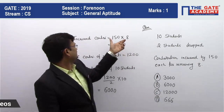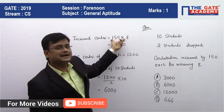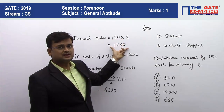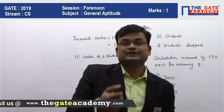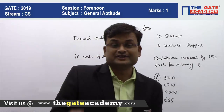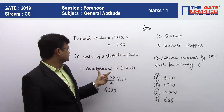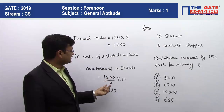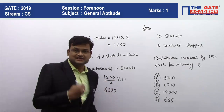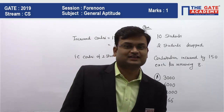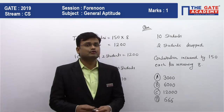The increased contribution of eight students multiplied by 150 is 1200. The contribution of 10 students will become 1200 divided by 2, multiplied by 10, which is equal to 6000. This is the cost of the gift. This was a very simple question; I hope you have understood the solution.